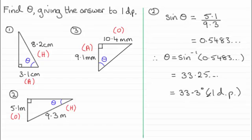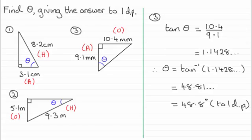And finally, for number three, with the opposite and adjacent sides, this was the tangent ratio. The tan of angle theta equals the opposite over the adjacent. For that one then, we've got tan of angle theta equals 10.4 divided by 9.1, giving us 1.1428 and so on. Inverse tan both sides, and you end up with theta equaling 48.81 and so on, which is 48.8 degrees to one decimal place.